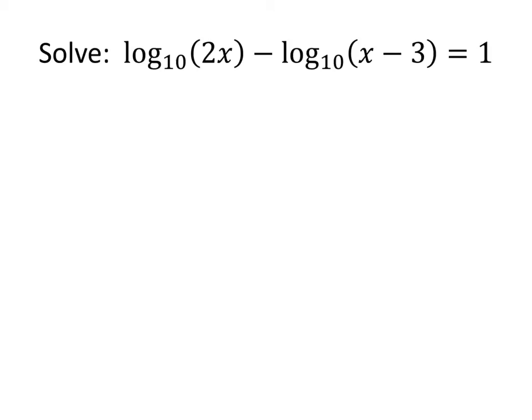So let's look at this example. We've got the log base 10 of 2x minus the log base 10 of x minus 3 equals 1. Now, you'll see this typically in a lot of these kinds of equations where we've got multiple logarithms in the equation. So the first thing that we want to do is try to combine those logarithms together into one logarithm, and we're going to do that using log rules.